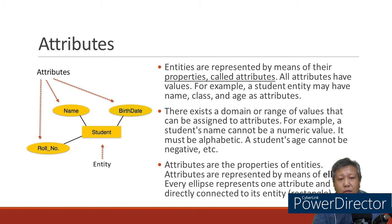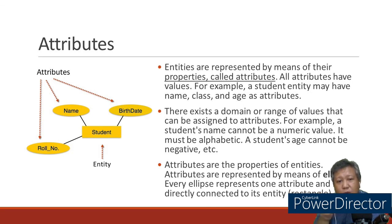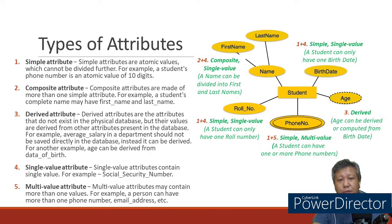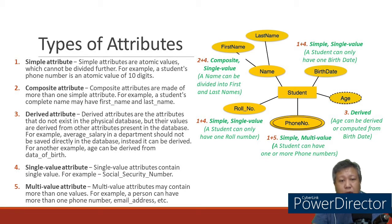Attributes are represented by drawing an ellipse, with the name of the attribute inside the ellipse. These properties or attributes should be connected to the entity that owns them. There are different types of attributes. Simple attributes — like first name, last name, role number, and birth date — are the smallest representation. Composite attributes are made of more than one simple attribute, like 'name' which is made up of first name and last name.